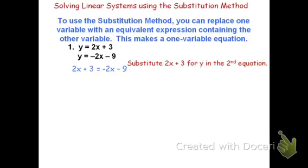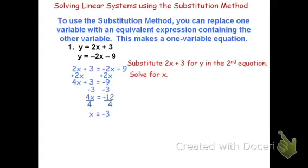This is now down to a single-variable equation — only x's. To solve for x, I'll add 2x to both sides and get 4x plus 3 equals negative 9. I'll then subtract 3 from both sides and get 4x equals negative 12. Dividing both sides by 4, I get x equals negative 3.